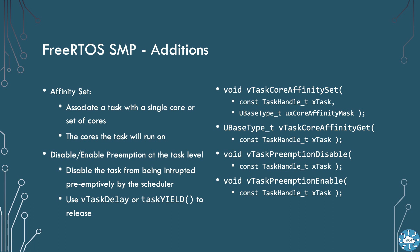We can also disable pre-emptive multitasking for a given task, i.e. prevent the task from being interrupted by the scheduler. The task will then need to use task delay or task yield to release control to the scheduler.